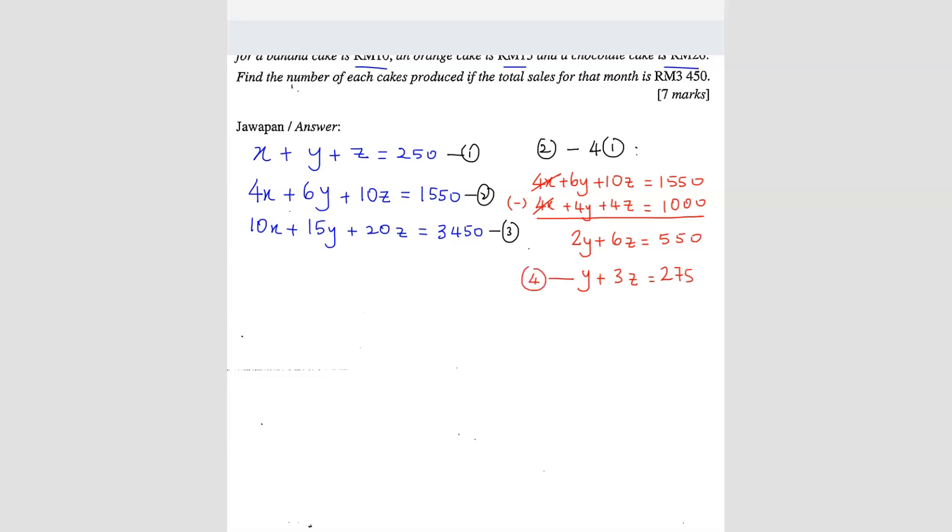What else can we combine? I think we can do the third equation and the first equation. So third equation minus 10 times the first equation. Of course, if you simplify the equations because they can all be divided, you can do that. But I'm not going to do that because I feel like it's just extra steps.